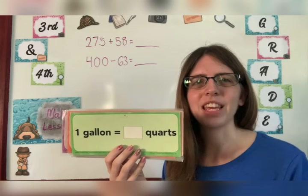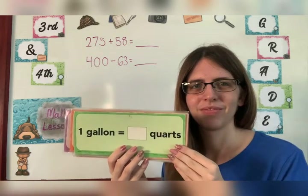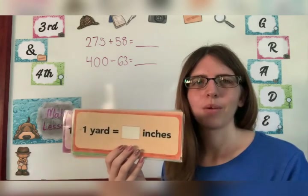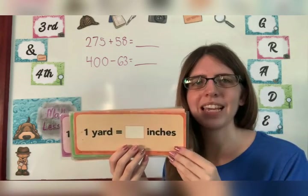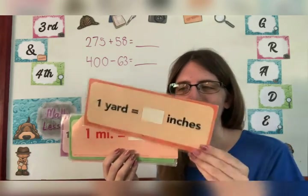One gallon equals how many quarts? Four quarts. One yard equals how many inches? Thirty-six inches.